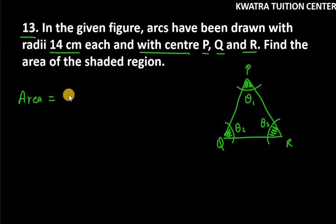The first sector has angle theta 1 over 360 and pi r square. Now how much is r given here? The radius of each sector is 14 centimeter, so this is 14 square. Now we have to add the second sector.